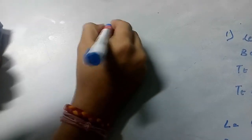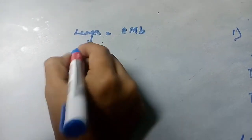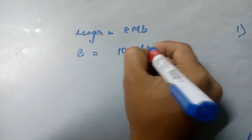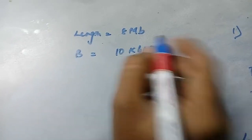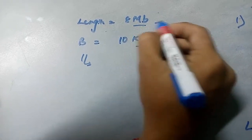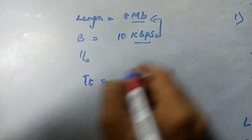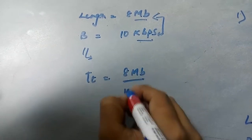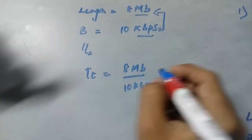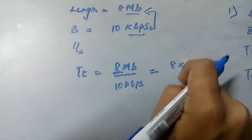Now if the length of the packet is 8 MB and the bandwidth is 10 KB per second, we need to convert to a single unit. The transmission delay will be 8 MB divided by 10 KBPS, where 8 MB is written as 8 into 2 raised to 10.